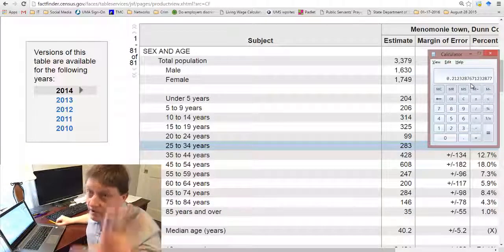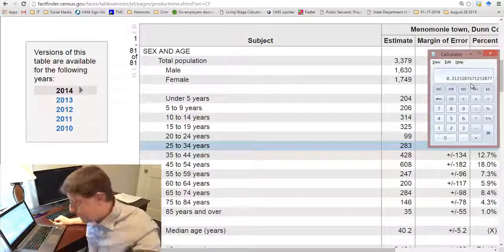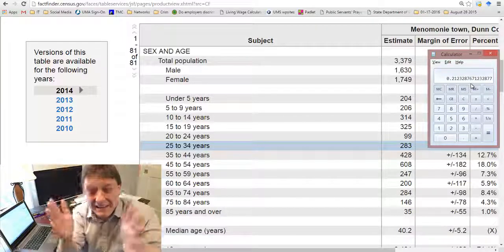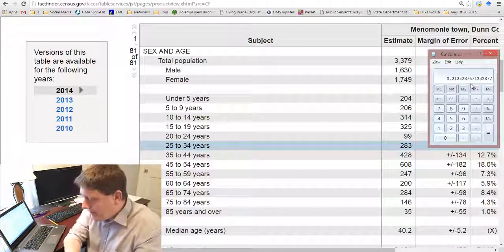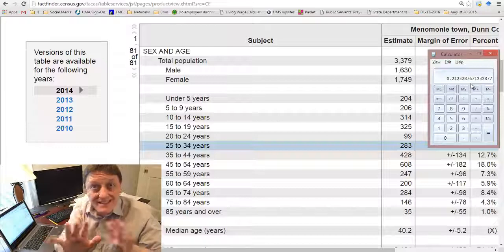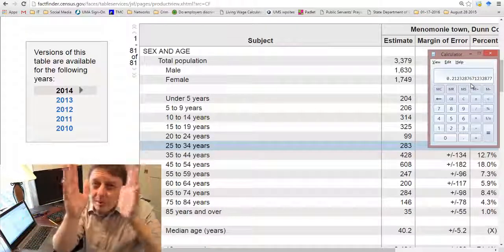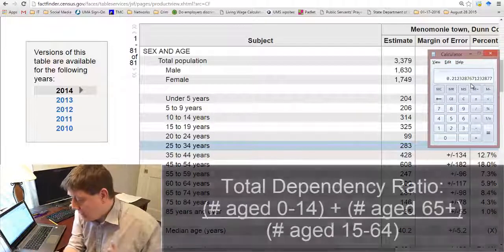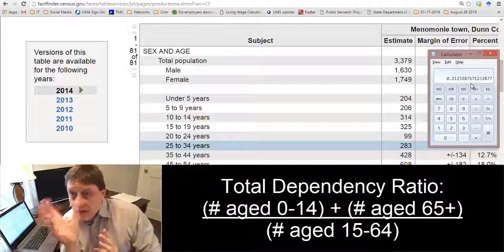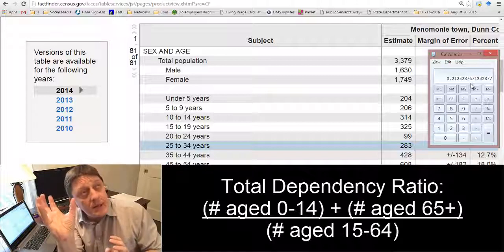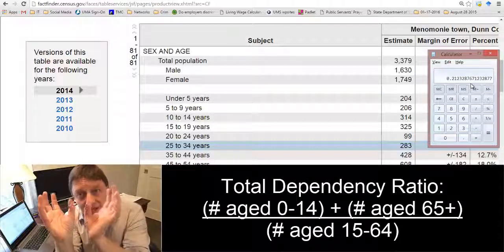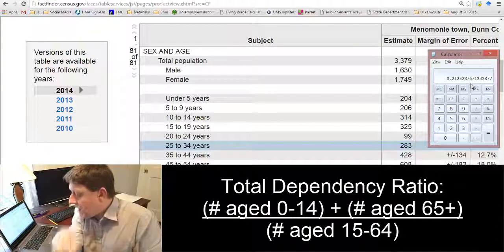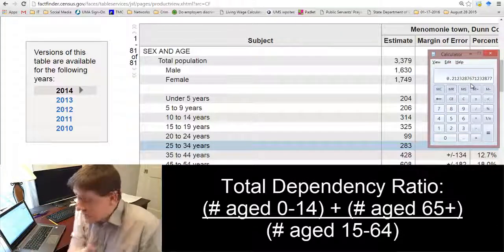There are some towns where there are very few youth and there are a whole lot of retirees. So what can we do now overall? We can say, let's not care about youth versus old age. Let's just talk about people who are likely to be working and people who are not likely to be working. And that is the total dependency ratio. And what you do there is you take the number of people who are 0 to 14 plus the number of people who are 65 plus, add those two together, and then divide by the number of people who are aged 15 to 64.